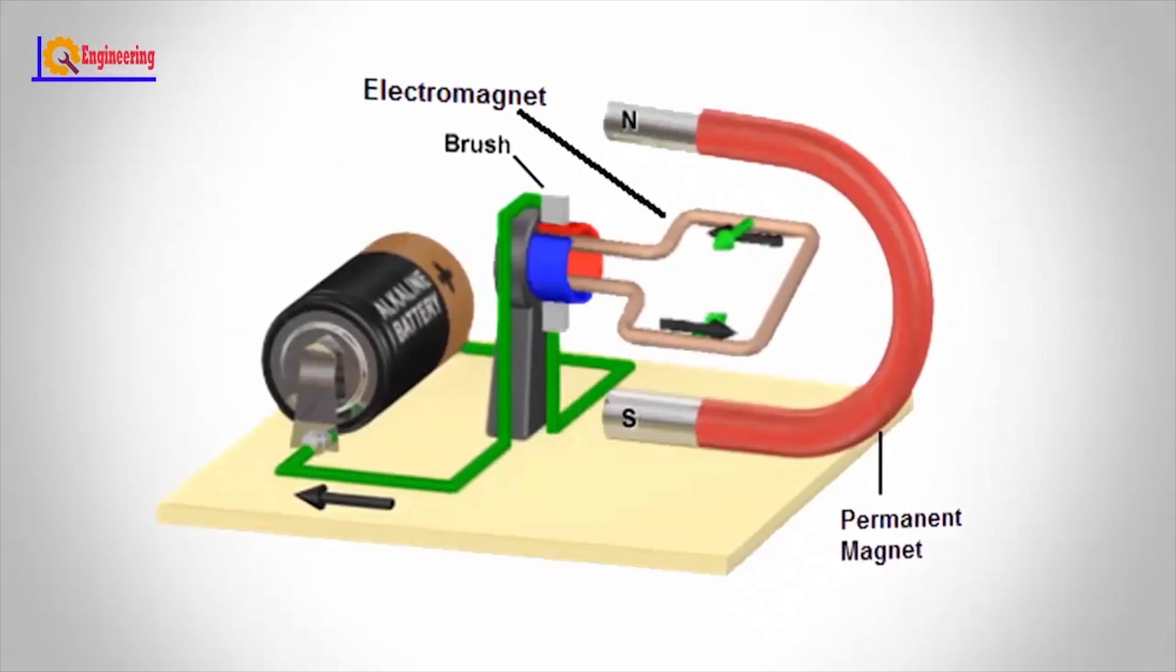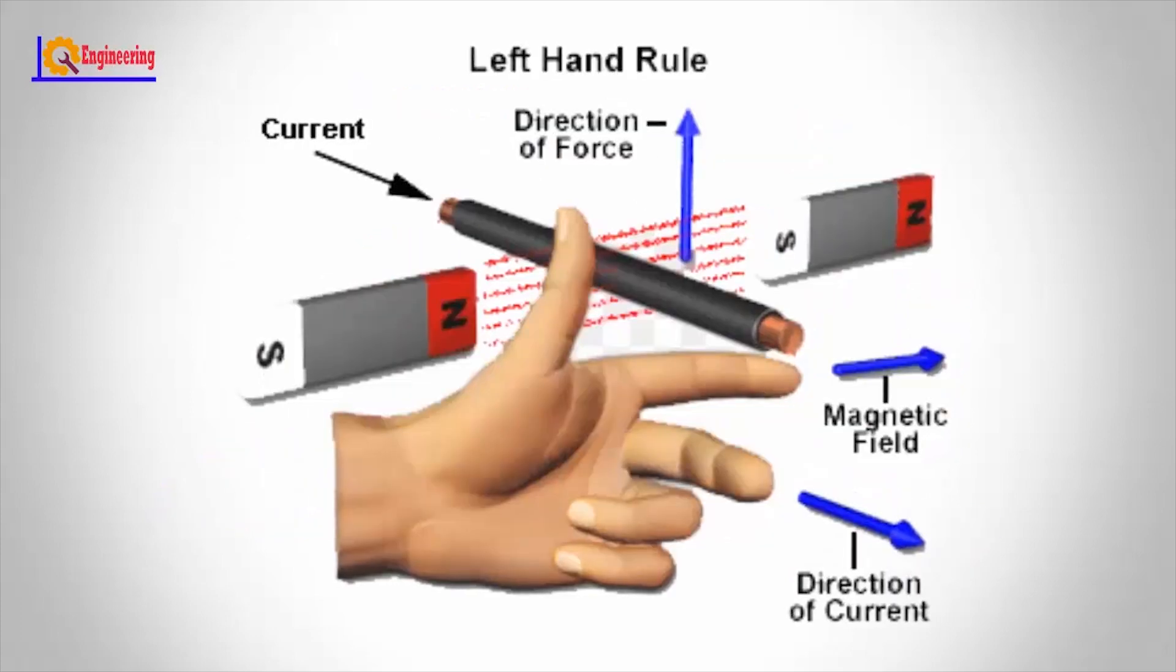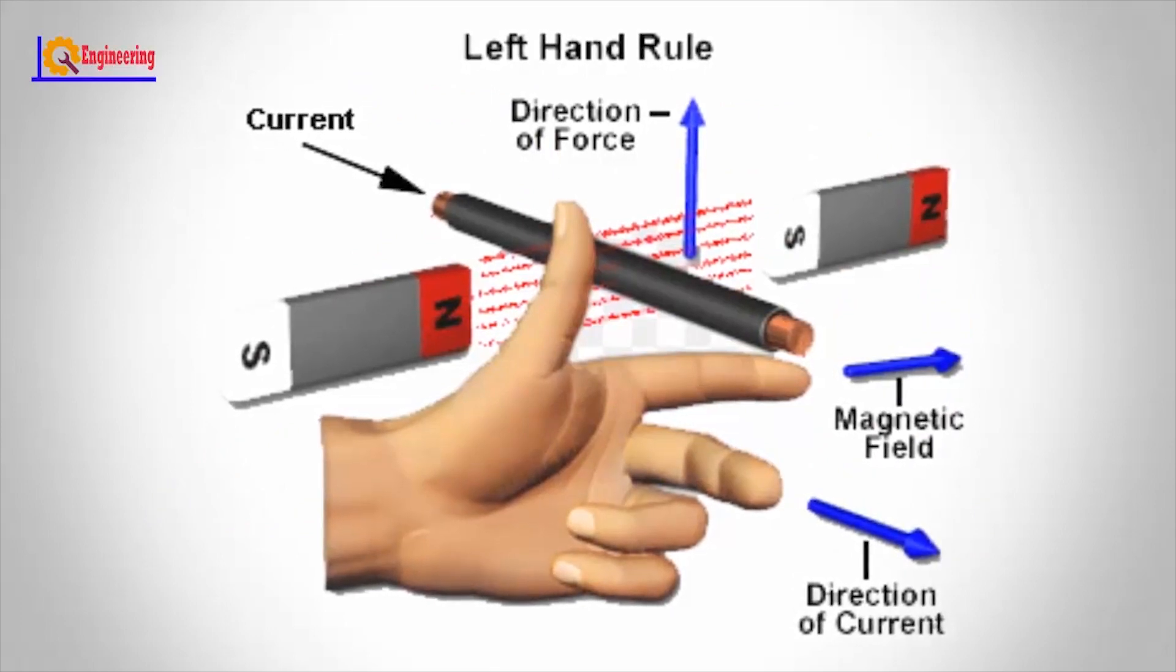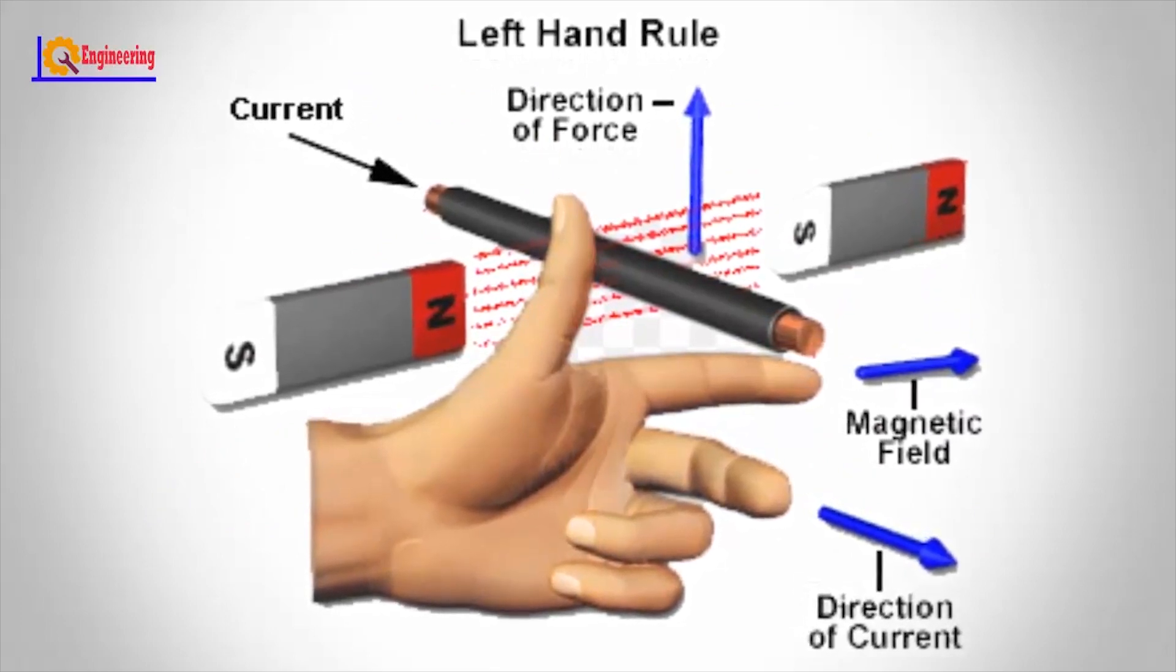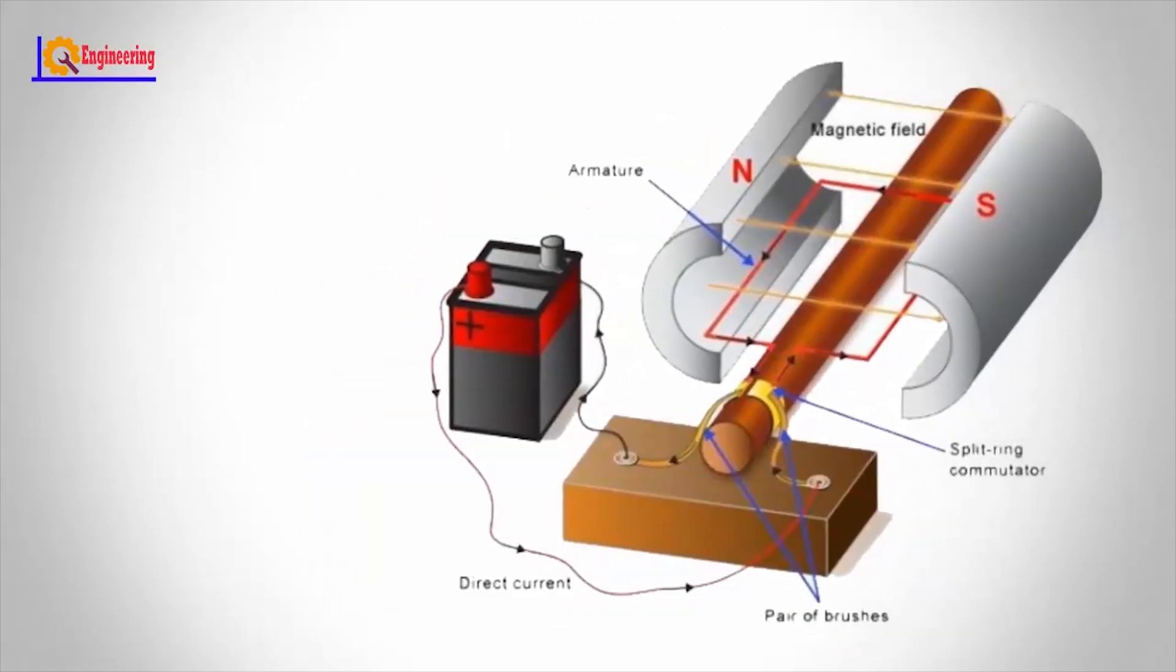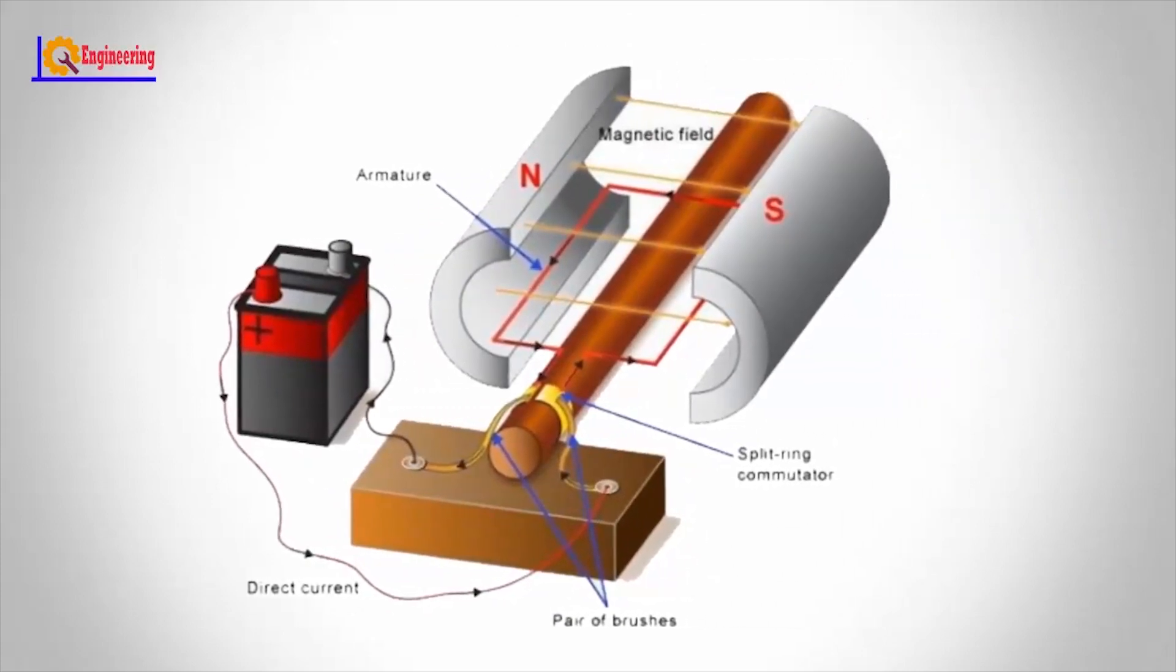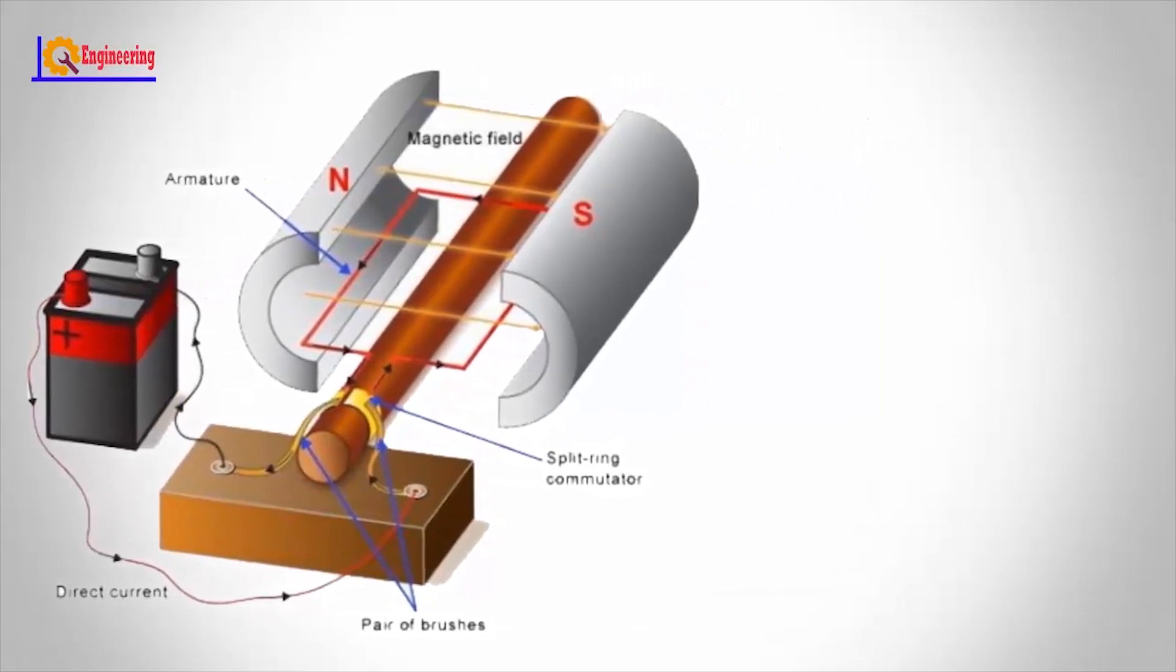Whereas in the DC motor, Lorentz principle is followed. Current carrying conductor placed in the external magnetic field experiences a force which is known as Lorentz force, and torque is a result of this Lorentz force. Permanent magnets are stationary which produces magnetic field, and when current carrying conductor is placed in it, torque is produced which rotates the motor.